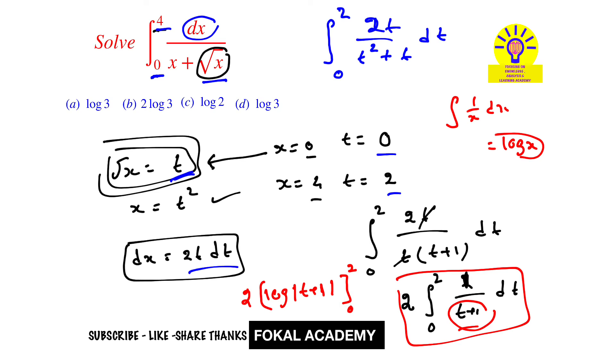Now apply limits, then becomes 2 into log 3. And this is the required value for the given problem. So from the options, option b is the correct option. And this is the process of simplification.